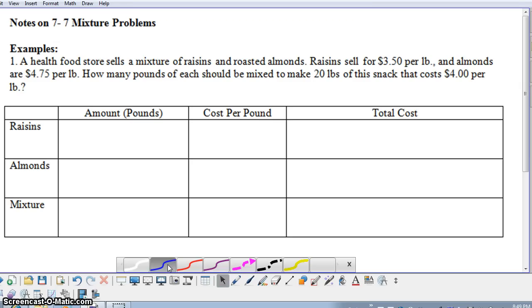A health food store is selling a mixture of raisins and almonds, and the raisins sell for $3.50 per pound, and the almonds sell for $4.75 per pound. Right away here I'm going to transfer this information into our chart. The raisins we know are $3.50 per pound, and here we have the cost per pound, and the almonds are $4.75 per pound.